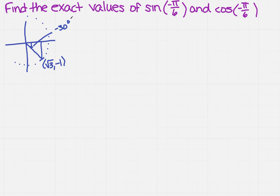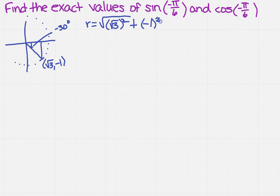So what good does that do me? Well, now I can find r. Remember, r equals the square root of my x value, which is the square root of 3 squared, plus negative 1 squared. When I simplify that, I get the square root of 3 plus 1, which is 4, so the square root of 4 is 2. So I've got r.